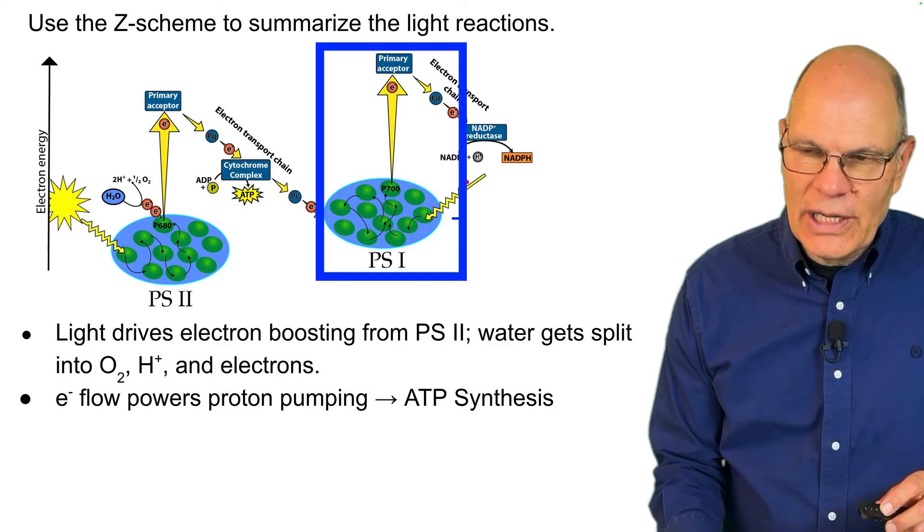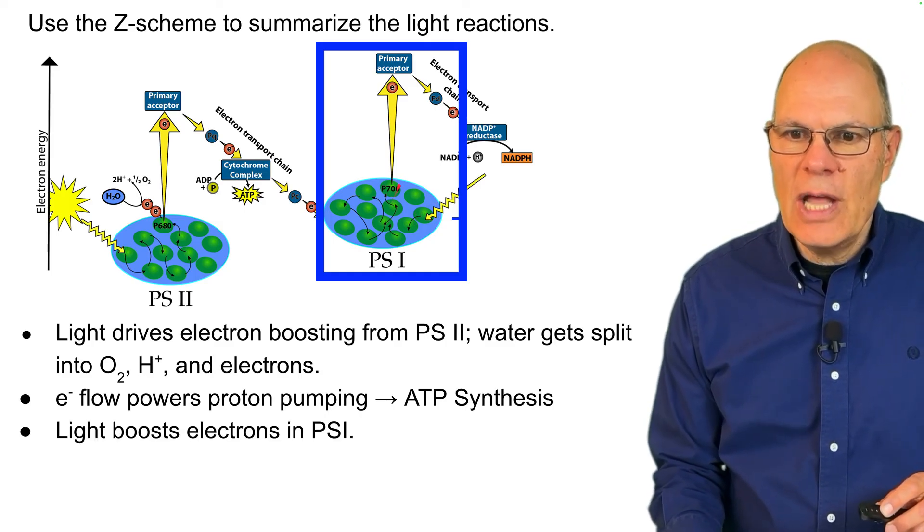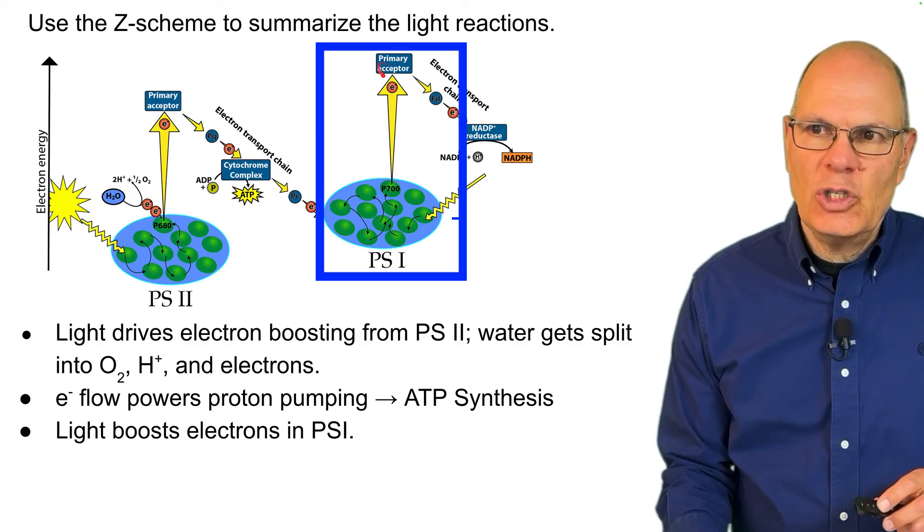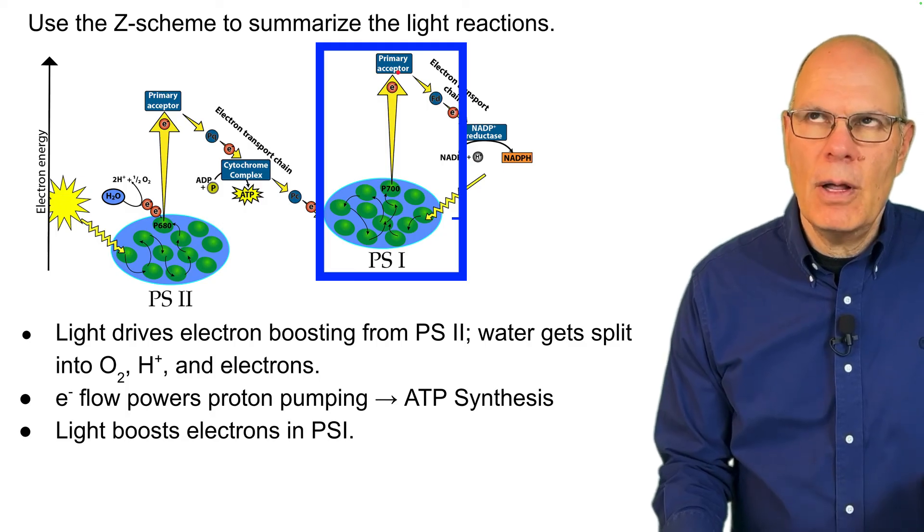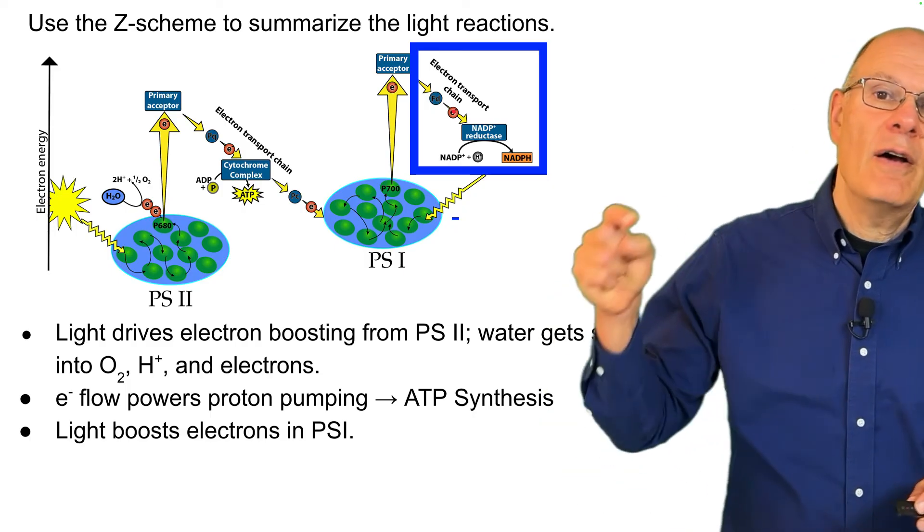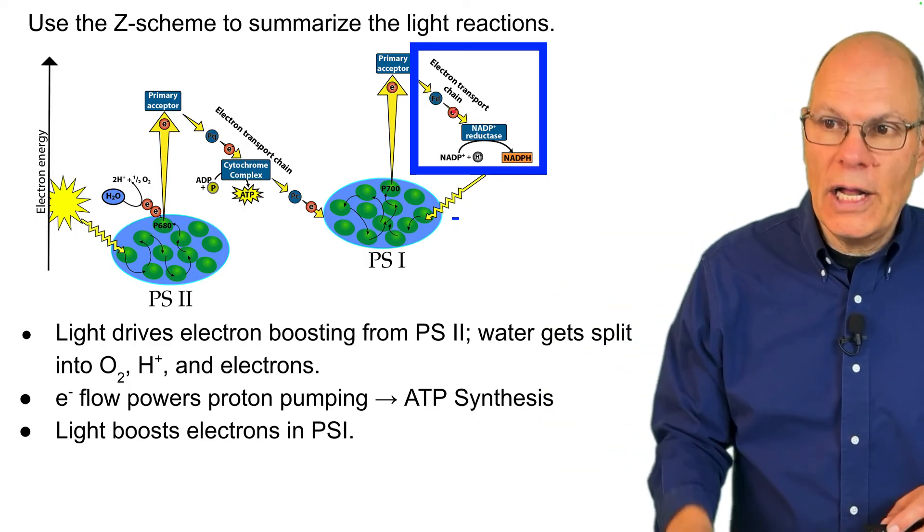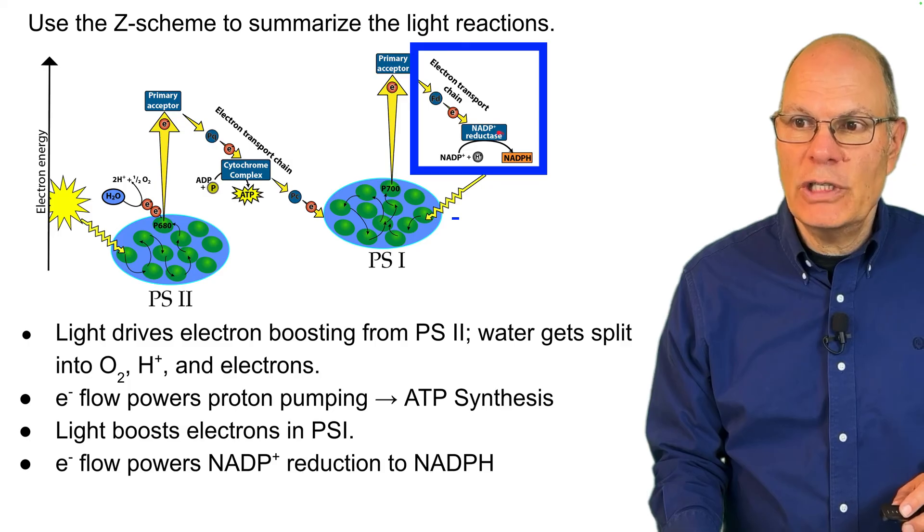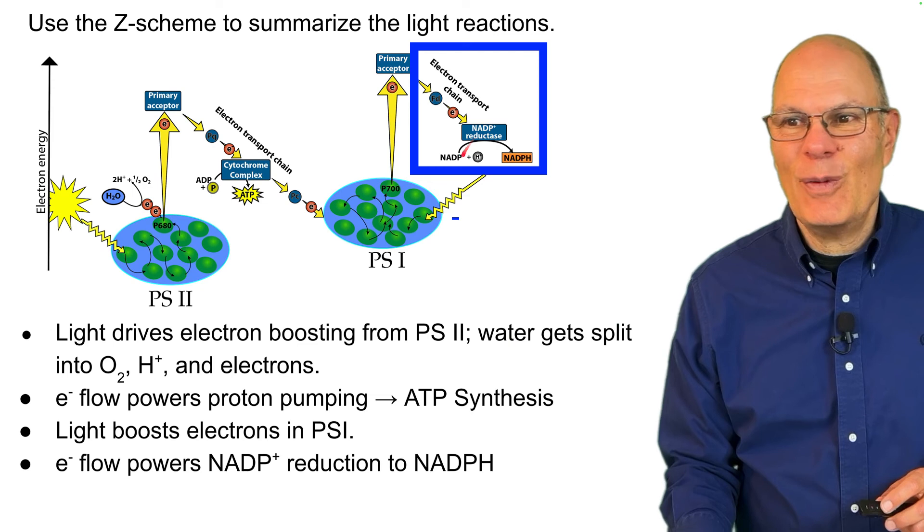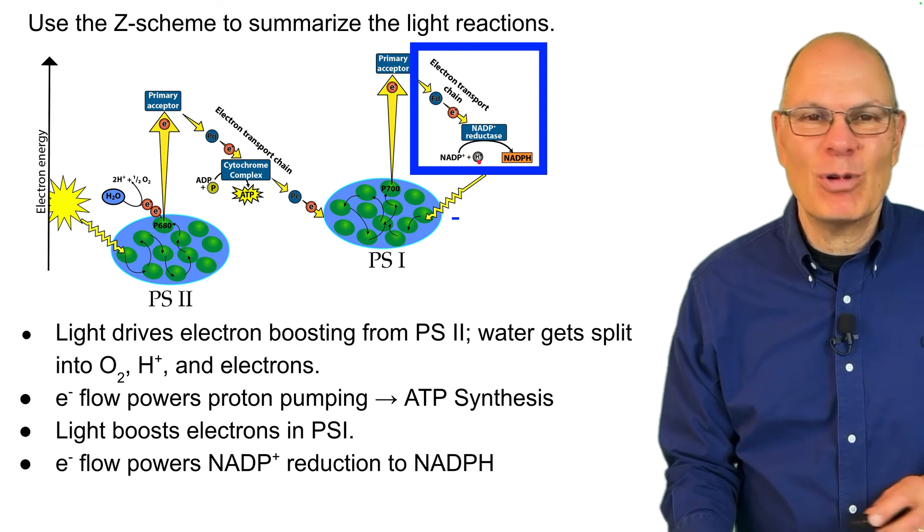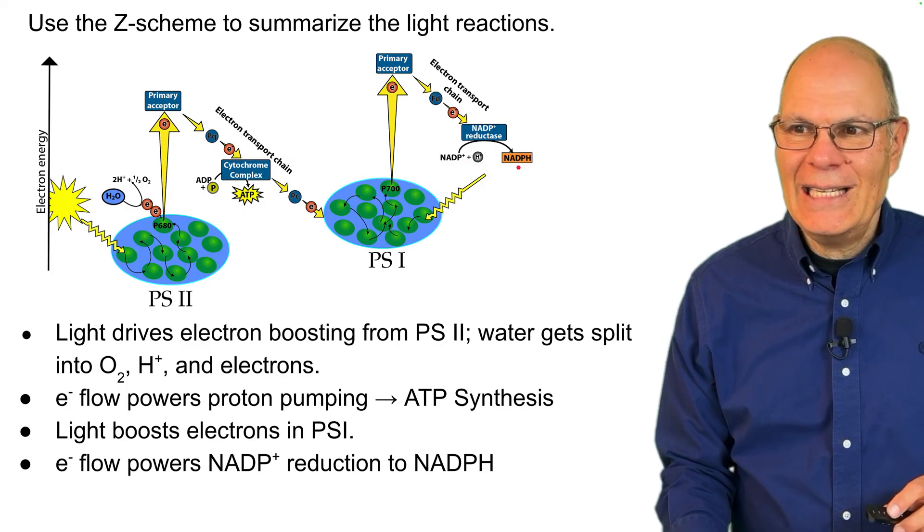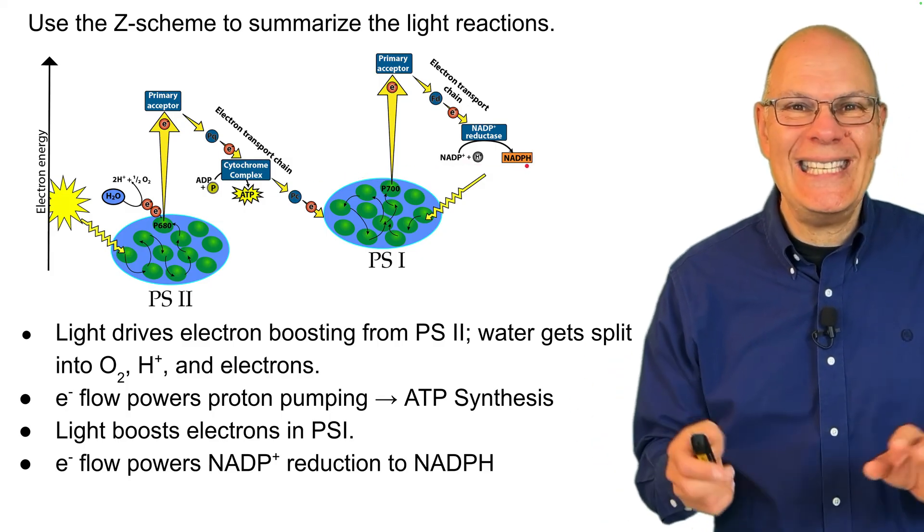But light comes in and it stimulates chlorophylls. And another electron gets boosted to a high energy level into what's called a primary electron acceptor that's in the thylakoid membrane. And that passes it off to the electron transport chain of photosystem I. It flows to the enzyme NADP plus reductase. And NADP plus reductase creates NADPH from NADP plus and a proton. So we have the two products of the light reactions, ATP and NADPH, beautifully explained by the Z scheme.